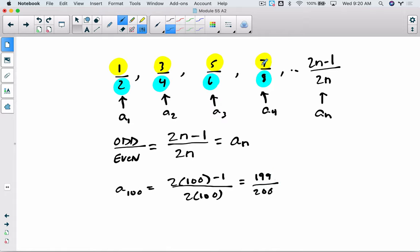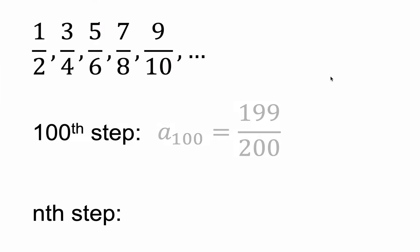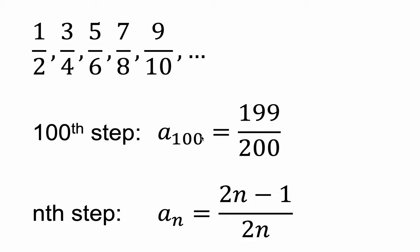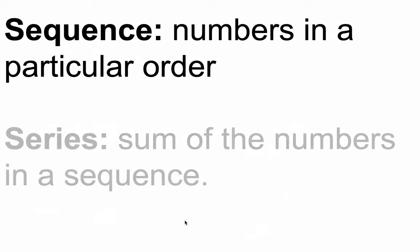That fits — each time the numerator is 1 less than the denominator. So this is the 100th step, and (2N − 1) over 2N is the Nth step. This is an explicit sequence: I can plug in N, and if I want the 1,000th step, I plug in 1,000. Whereas a recursive sequence requires going through all 999 previous steps by hand to find the 1,000th. There are sequences that need to be recursive — sequences we simply can't write explicit formulas for.